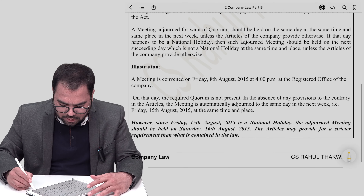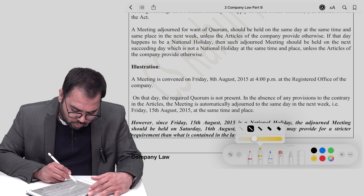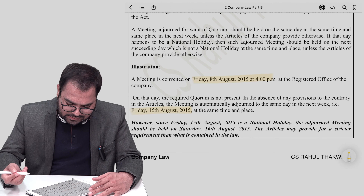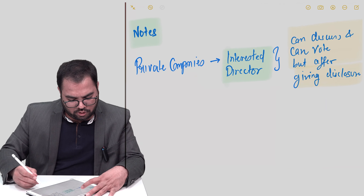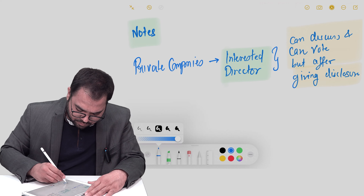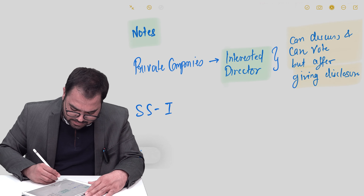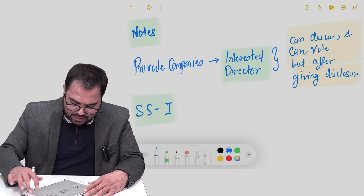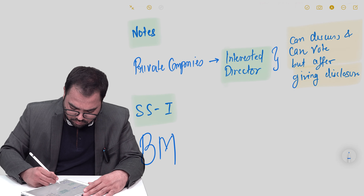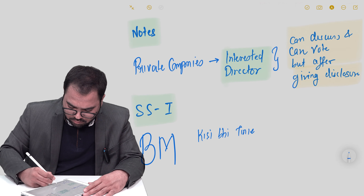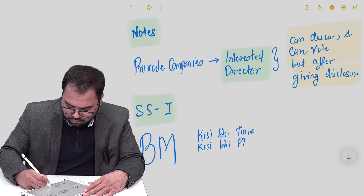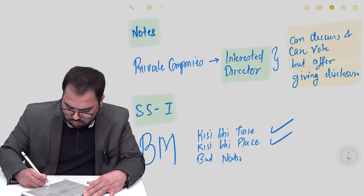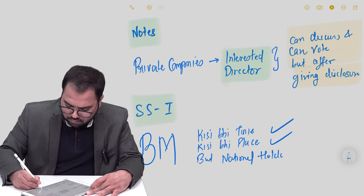To summarize everything discussed: if a meeting was called and had to be adjourned for want of quorum, and the next week's date falls on Independence Day, the board meeting will be held the next day after Independence Day. Secretarial Standard 1 confirms: a board meeting can be held at any time and any place, except on a national holiday.